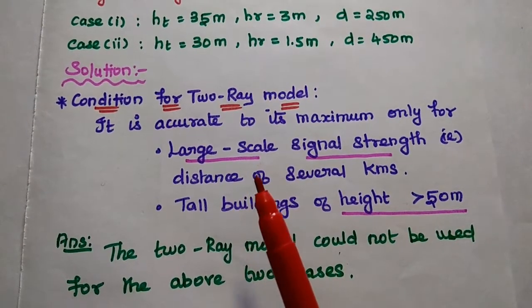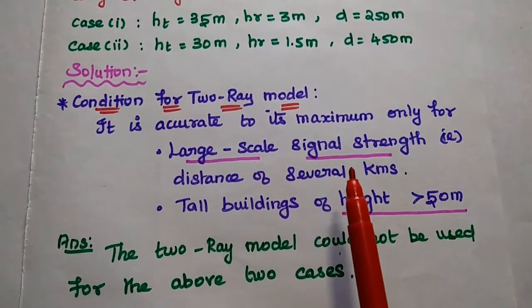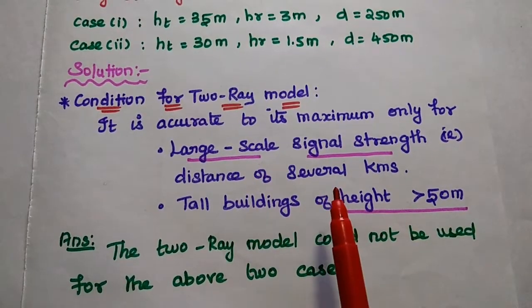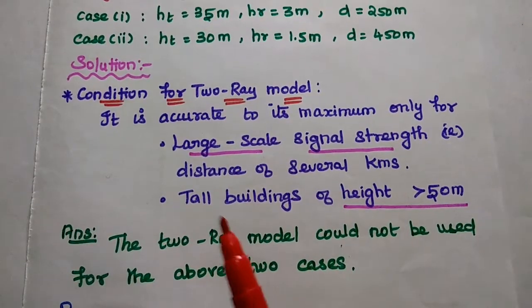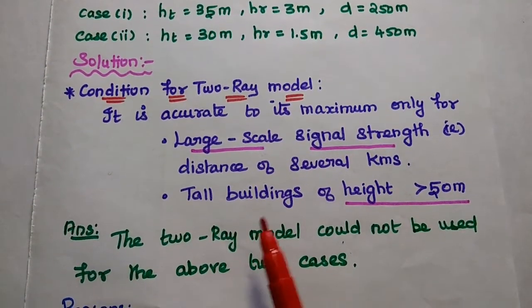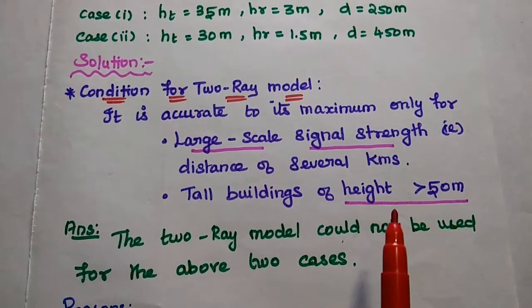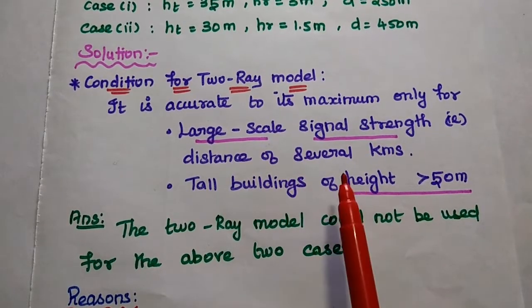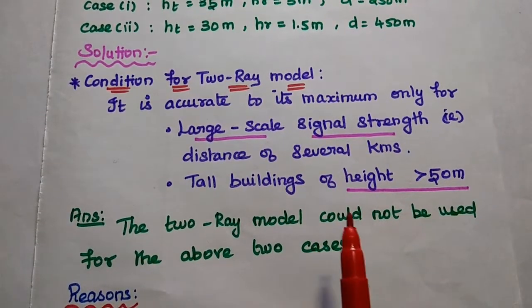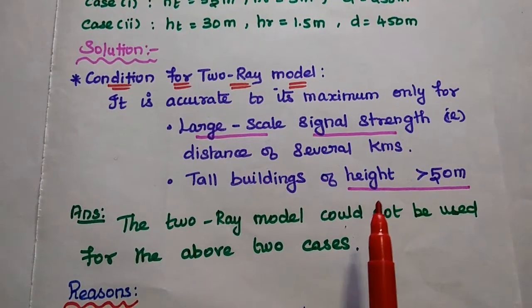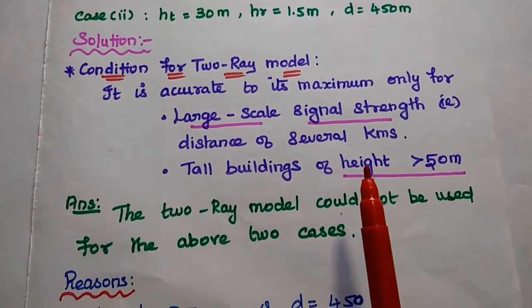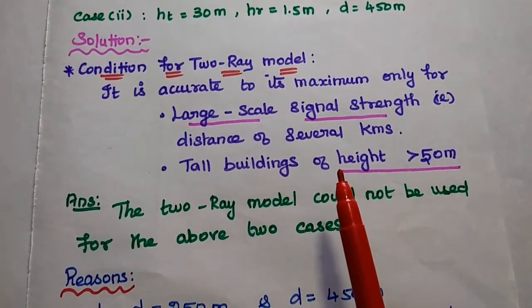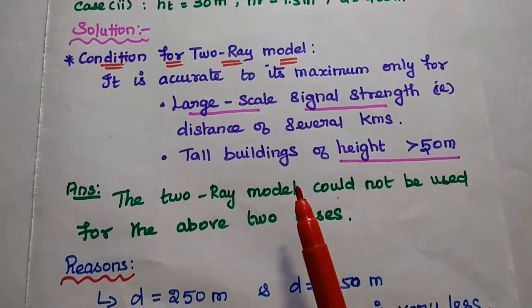First, it can be applicable for large-scale signal strength — large-scale means over a distance of several kilometers. The next condition is that it is applicable for tall buildings of height more than 50 meters. So, it is applicable for large-scale signal strength and the height should be greater than 50 meters. Whenever these two conditions are satisfied, we can get an accurate maximum result using this two-ray model.